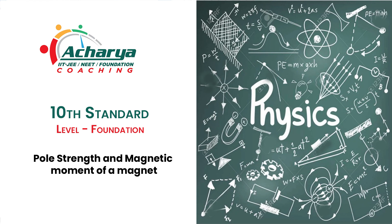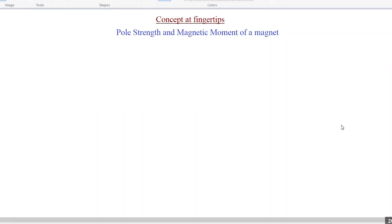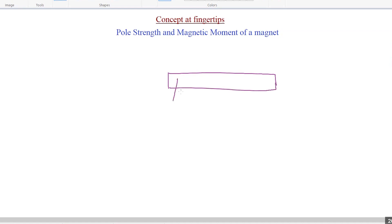Welcome to another session of Concept at Fingertips. This is Vidya, physics faculty from the Concept Tree. In another session, we had discussed the properties of magnets — that the magnet attracts magnetic materials and the attraction is maximum at poles and minimum at other points. Today we are going to discuss the topic pole strength and magnetic moment of a magnet.